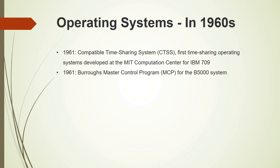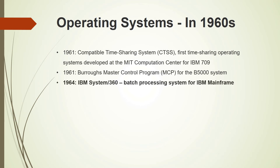In 1961, the Burroughs Master Control Program (MCP) was developed for the B 5000 system. In 1964, the famous IBM System/360 operating system, which was a batch processing system for IBM mainframe computers, was developed.